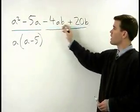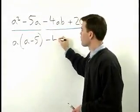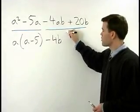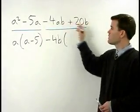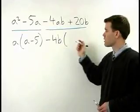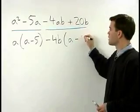So we don't just factor out 4b, we factor out negative 4b. What's left inside the parentheses will be each of these two terms divided by the negative 4b that factored out. So that's a minus 5.